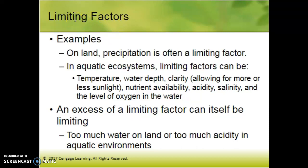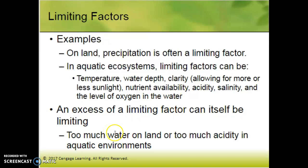Examples on land: water is going to be a limiting factor a lot. In aquatic ecosystems there are a lot of various limiting factors — a lot of times we're going to be looking at nutrient availability, sometimes dissolved oxygen. An excess of a limiting factor can itself be limiting, especially when we talk about algal blooms and nutrient enrichment in water.